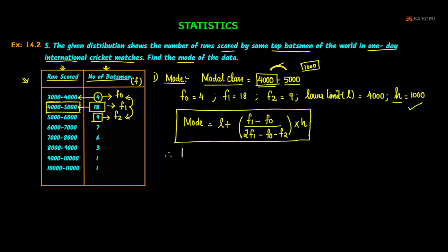Therefore, mode is equal to lower limit 4000 plus F1 minus F0, 18 minus 4, divided by F1 - 2 into 18 is 36 - 36 minus F0 is 4 minus F2 minus 9 into h. h value is 1000.